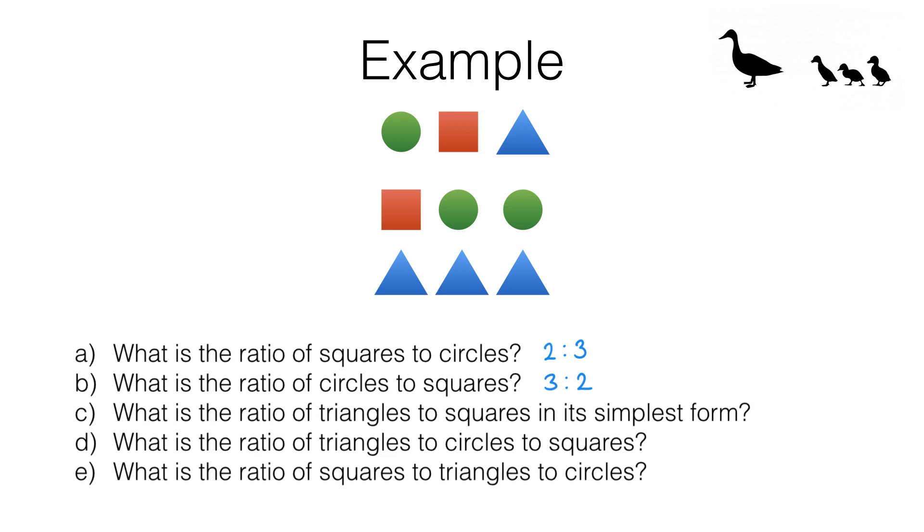We have got 1, 2, 3, 4 triangles and 2 squares, so that's a ratio of 4 to 2. That's triangles to squares. Now in its simplest form that is 2 to 1.